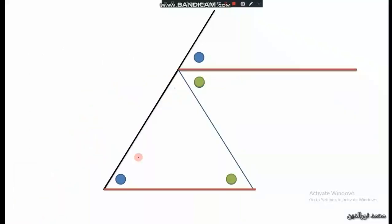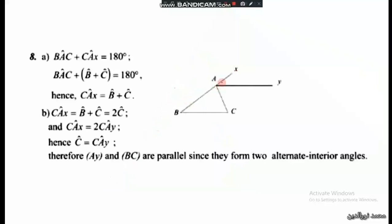And then after that we have angle CAX equals B plus C. In this drawing, angle CAX equals B plus C. I have B plus C at the bottom, so I can say it equals 2C or equals 2B, it's the same. So angle CAX equals angle CAY. Then angle C equals angle CAY.